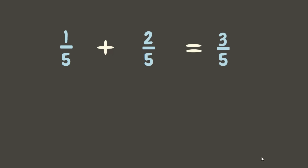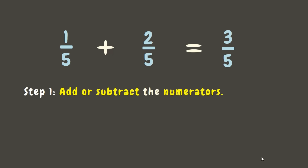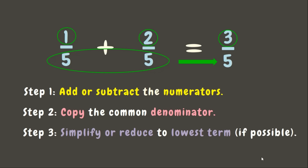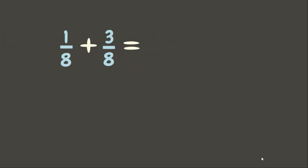Now let us observe this equation to learn how to add or subtract similar fractions without drawing any representation. The first step is to add or subtract the numerators: one plus two equals three. Then we copy the common denominator, which is five. Lastly, we simplify or reduce the fraction to its lowest term, only if possible. Since three-fifths is already in its lowest term, that is our final answer.